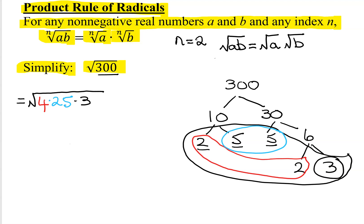So the square root of 300 is the square root of 4 times 25 times 3. The reason I write it in this form is I want the square root of 4 using the product rule of radicals times the square root of 25 times the square root of 3.